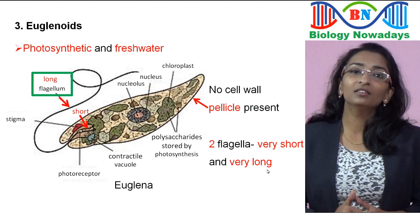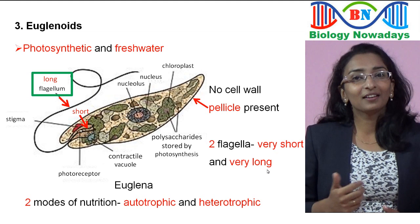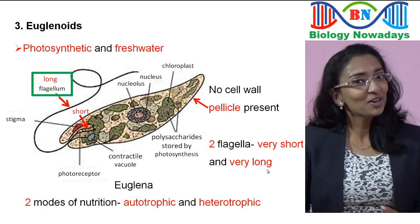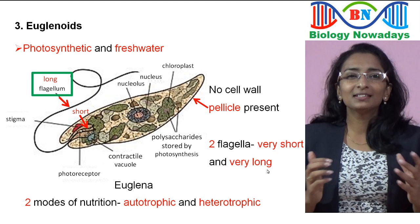As explained in part 1 of this lecture, euglenoids have two modes of nutrition — autotrophic and heterotrophic. Euglena has chlorophyll in its chloroplast and in the presence of sunlight prepares its own food, acting as autotrophic. But in the absence of light, it becomes heterotrophic by absorbing nutrients from the surroundings. The chlorophyll of euglenoids is found to be the same as that of higher plants.